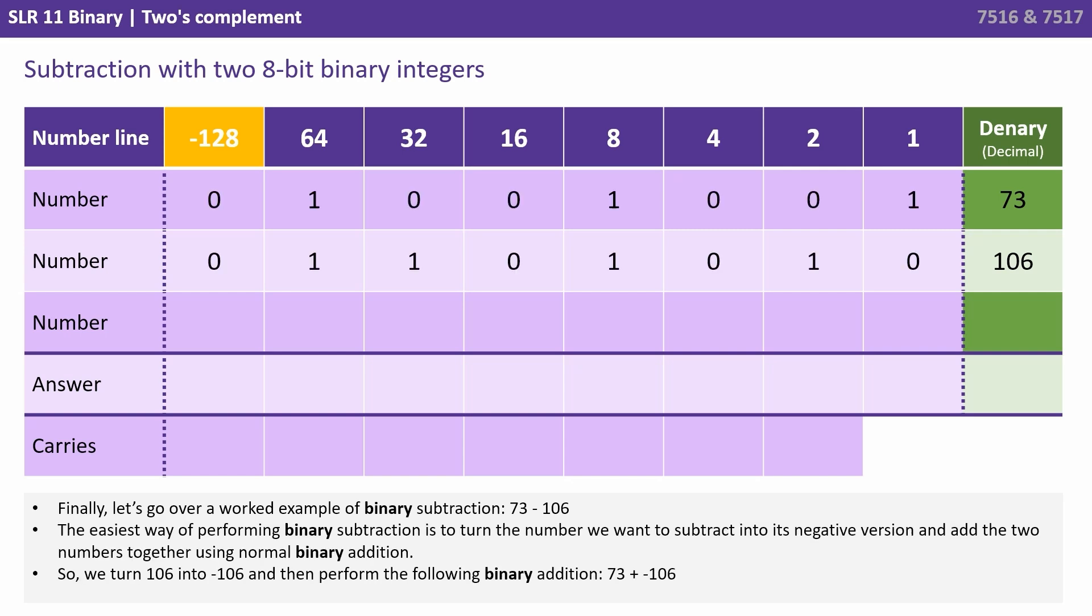The easiest way of performing subtraction is to turn the number we want to subtract into its negative version and then add the two numbers together using normal binary addition. So we're going to turn 106 into negative 106 and then perform the following addition: 73 plus negative 106.